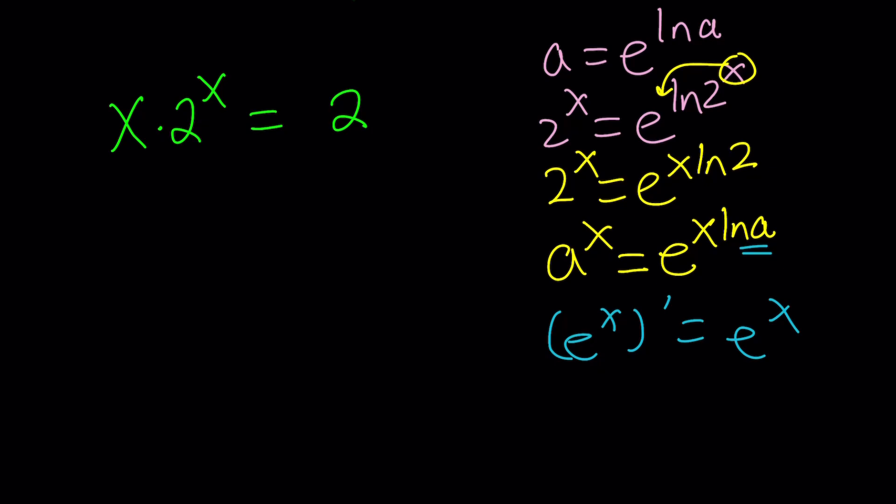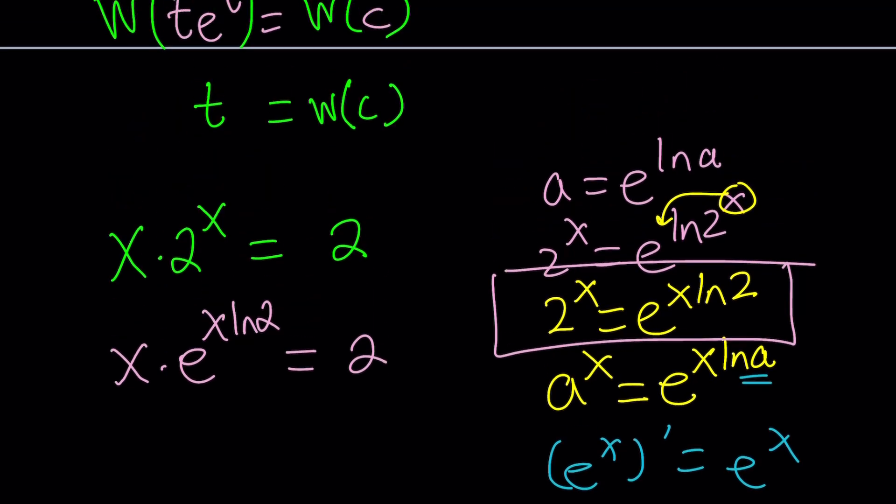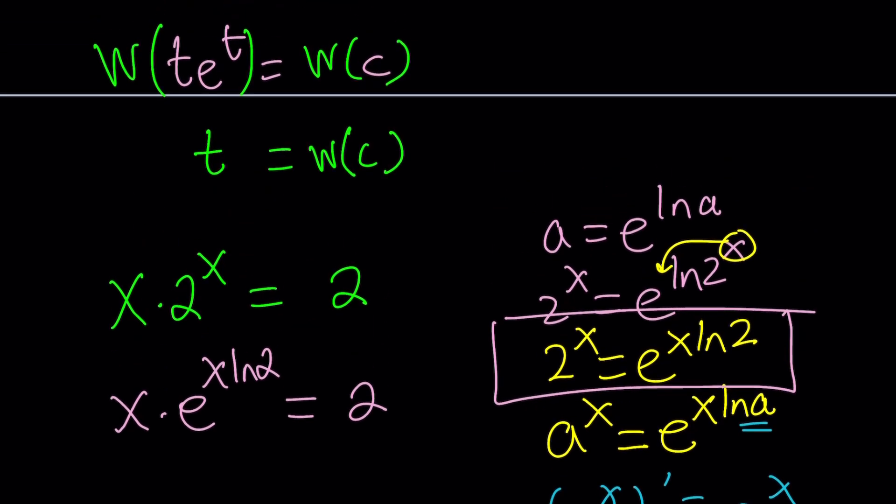So let's see how we can convert it. So we're going to replace 2 to the x with this, e to the x ln 2. And of course, that doesn't change anything on the right-hand side because we didn't do anything to both sides. We just wrote it differently. Now, here's the thing. Since we want t e to the t, let's just forget about all this for now. And our focus is on getting something like t e to the t.